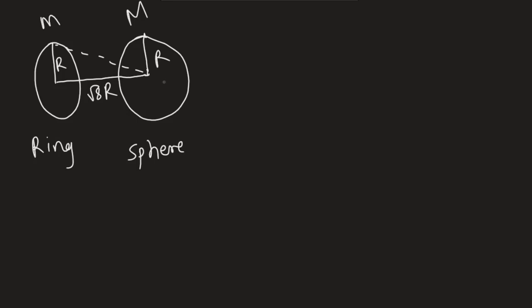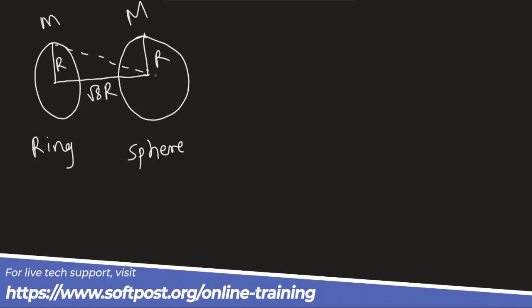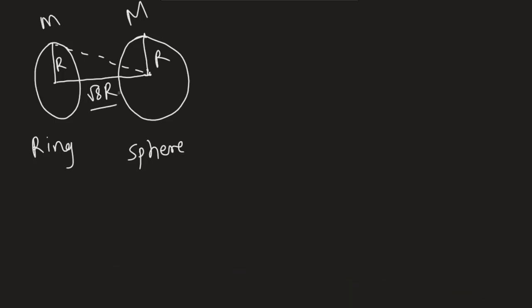There is a solid sphere here on the right side. The radius of the ring is r, and the distance between the center of the ring and the center of the sphere is square root of 8r. The ring has mass m and the sphere has mass M.